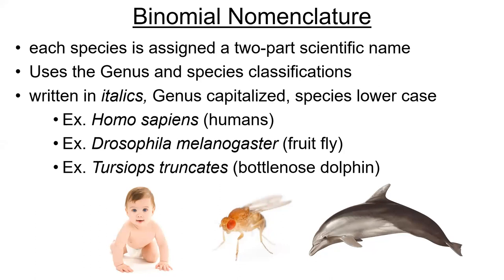So every species on Earth — all eight million-ish or so — have their own specific binomial nomenclature scientific name. And you'll notice when we write it, we always write it in italics, and we capitalize the genus and we make the species lowercase. That's just standard formatting for writing down a species' formal scientific name.